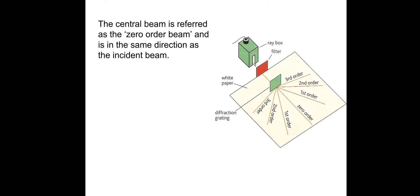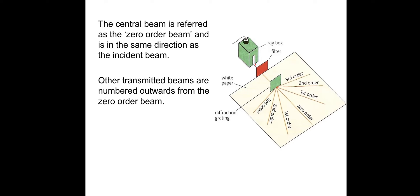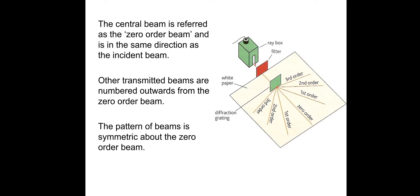The central beam is referred to as the zero order beam and it is in the same direction as the incident beam - passing straight through with no change in direction. The transmitted beams are numbered outwards from the zero order beam: first order, second order, third order. The pattern of beams is symmetric about the zero order beam.